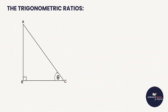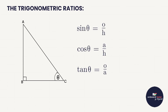In our last video we were introduced to trigonometry. Trigonon means triangle, metric means measurement, so it's based on measuring the sides or angles of a triangle. We were introduced to some trig ratios: sine, cos, and tan. One common way to remember them is SOH-CAH-TOA — sine theta is opposite over hypotenuse, cos theta is adjacent over hypotenuse, and tan theta is opposite over adjacent.